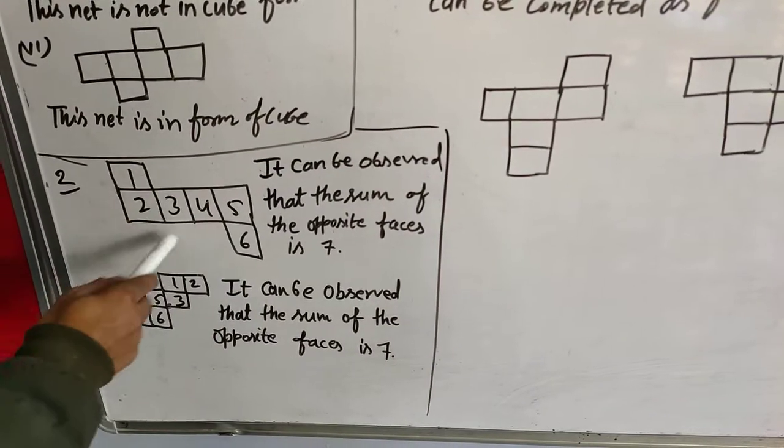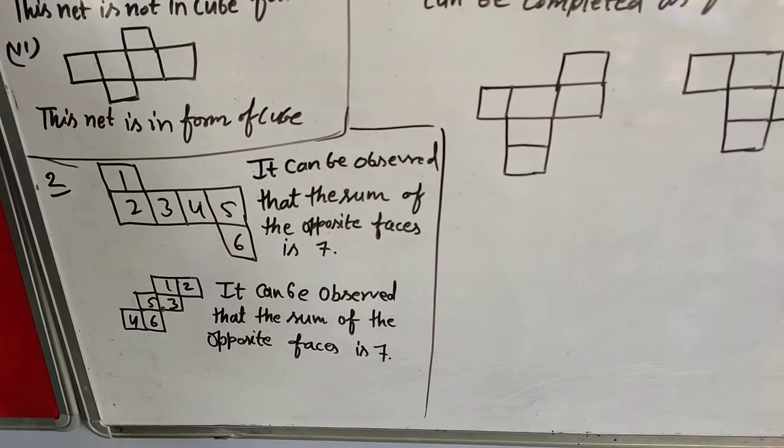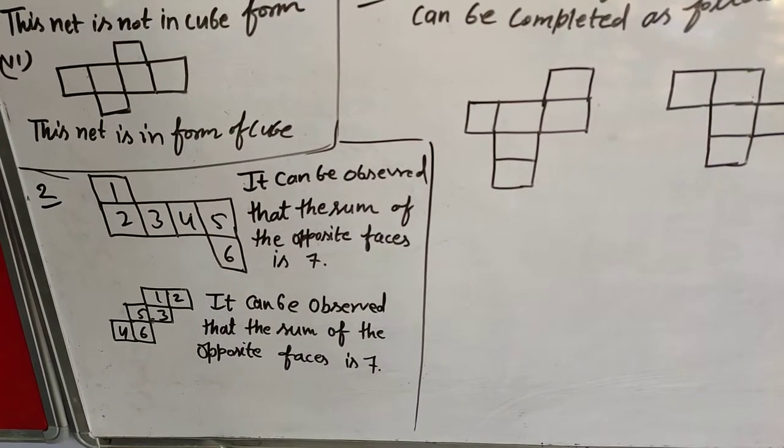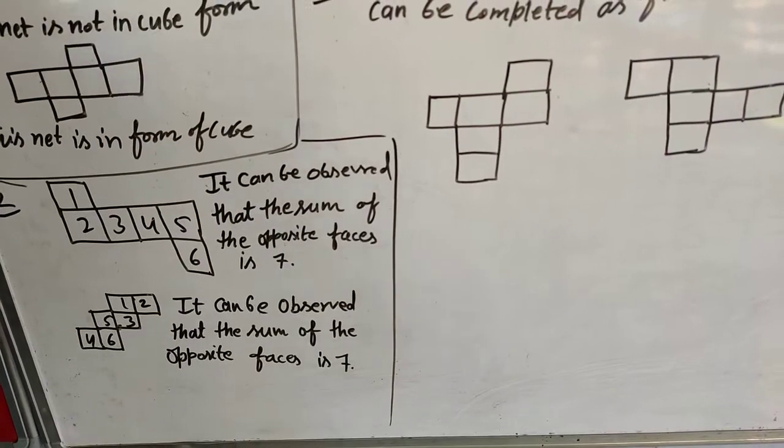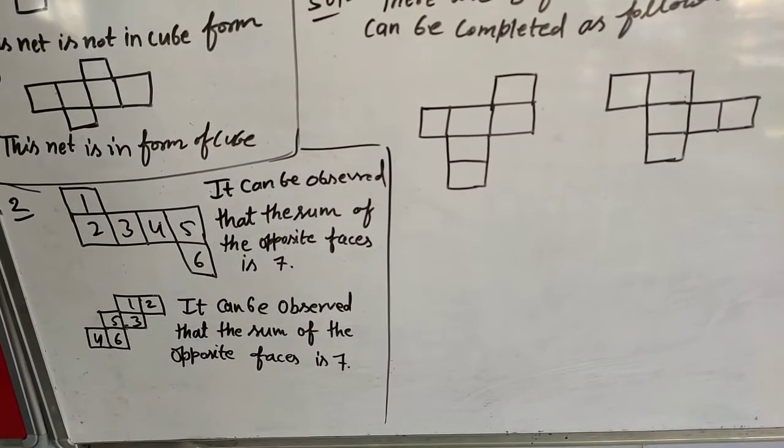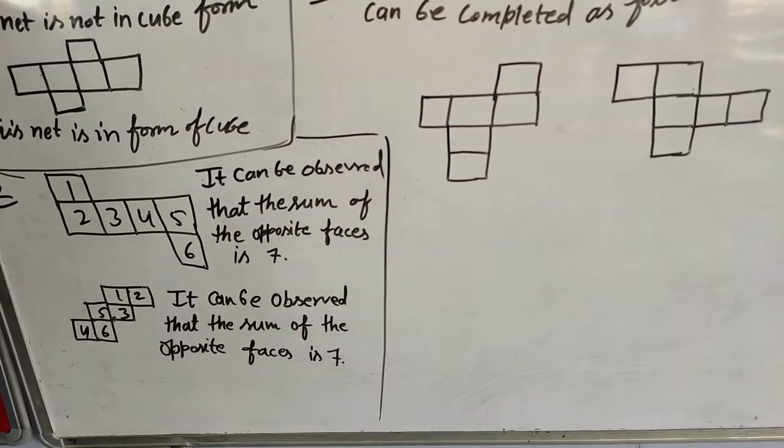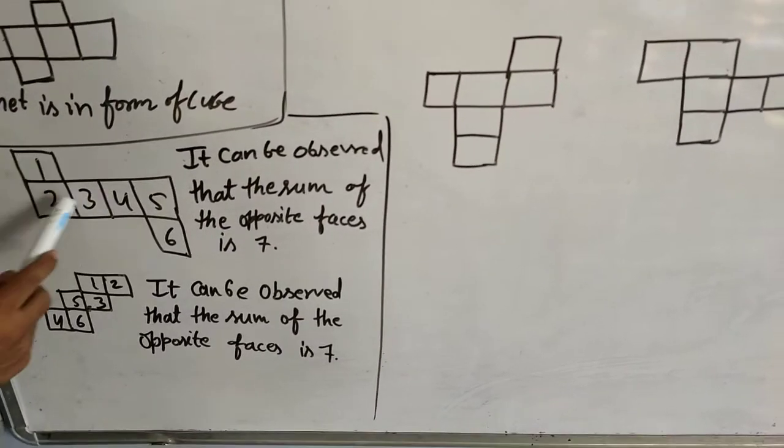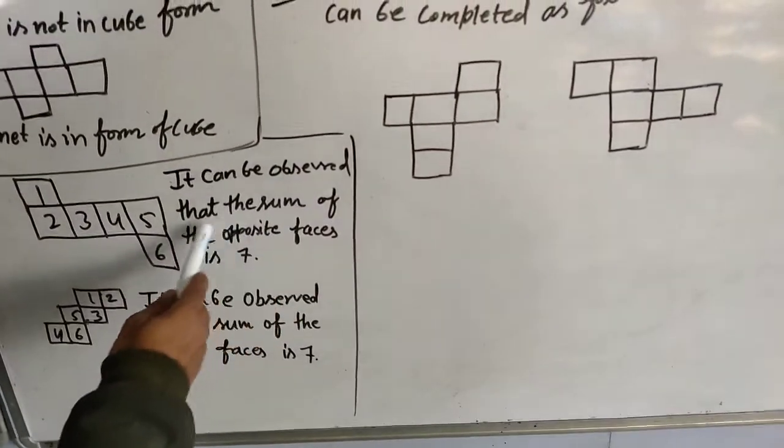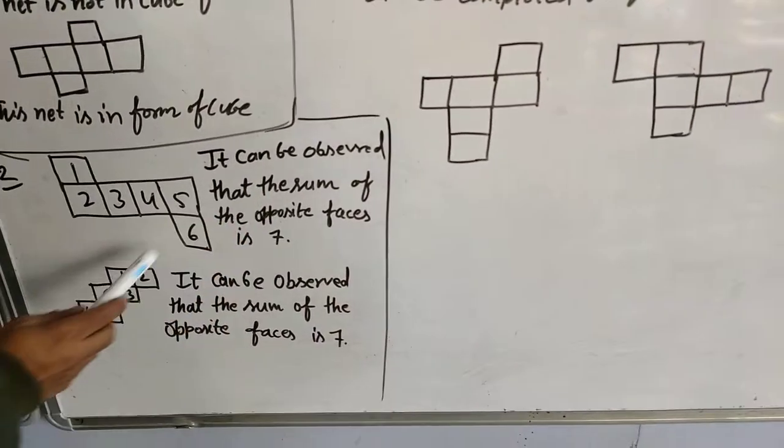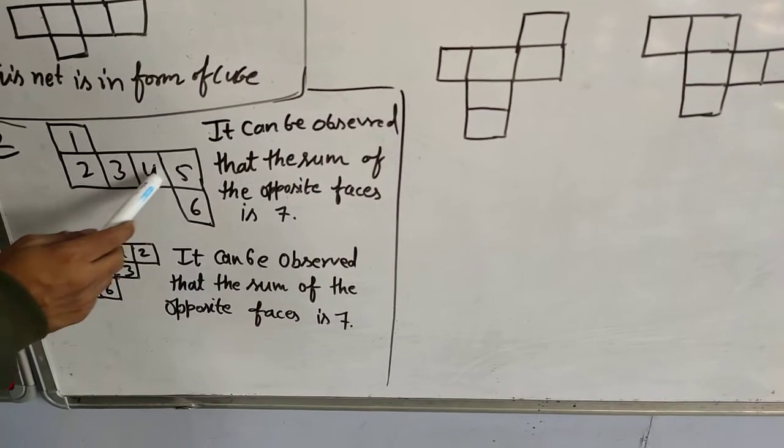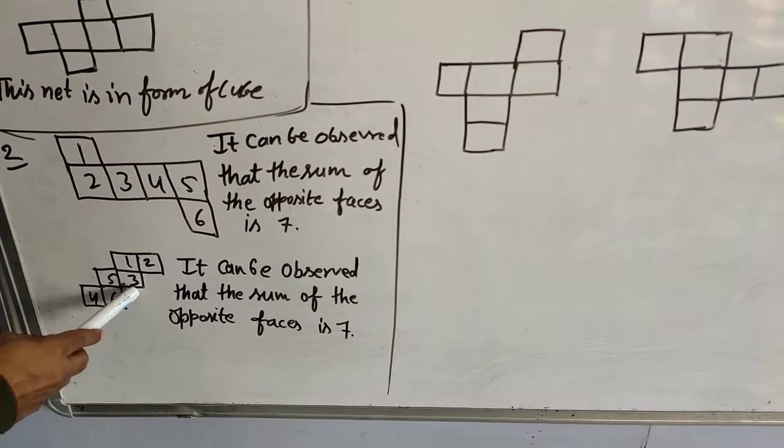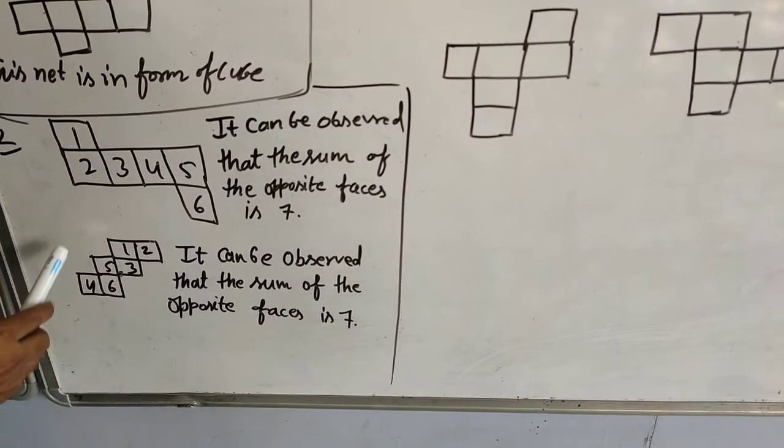These are given and these are blanks. So we have to fill the correct numbers to make a cube. So students, remember: there are six faces of a cube. The opposite faces sum to 7. So here is 1, 2, 3. It can be observed that the sum of opposite faces is 7. Make the cut of this net and make the cube. Second is 1, 2, 3, 4, 5, 6.